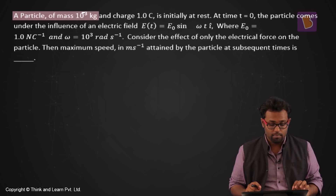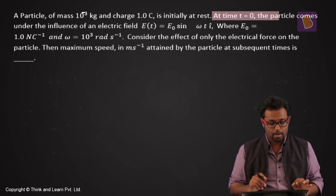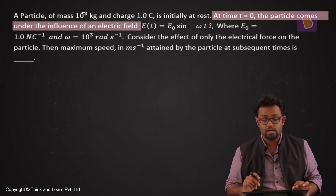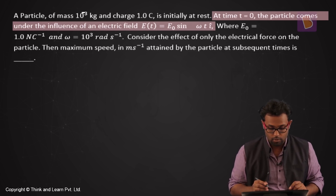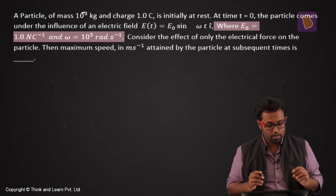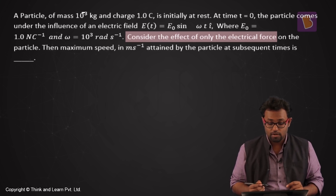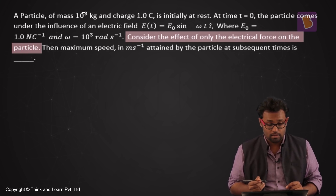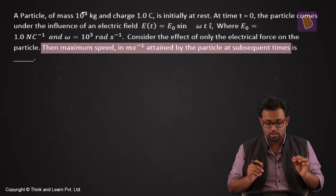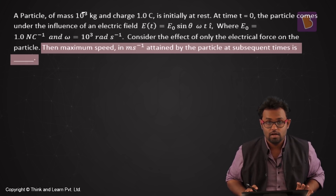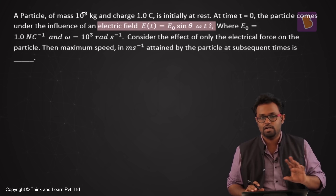A particle of mass 10⁻³ kg and charge 1 coulomb is initially at rest. At t = 0 it comes under the influence of an electric field E(t) = E₀ sin(ωt) î, where E₀ = 1 N/C and ω = 10³ rad/s. Considering only the electrical force, find the maximum speed in m/s attained by the particle.